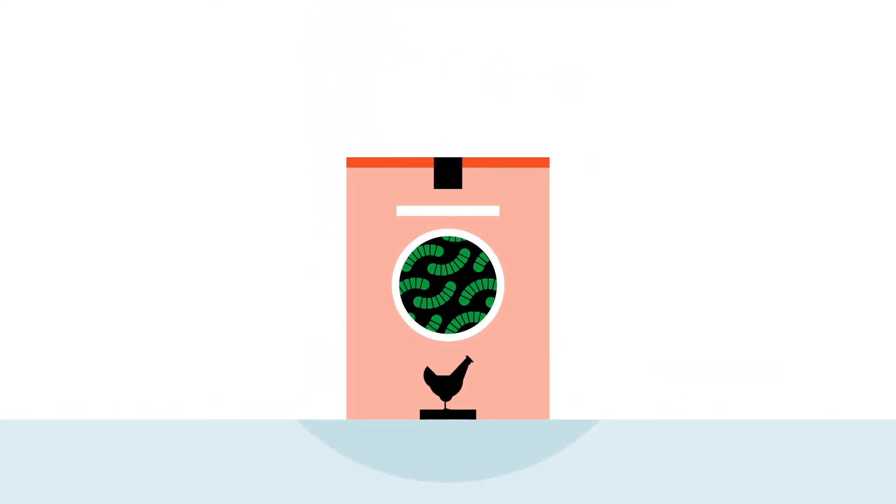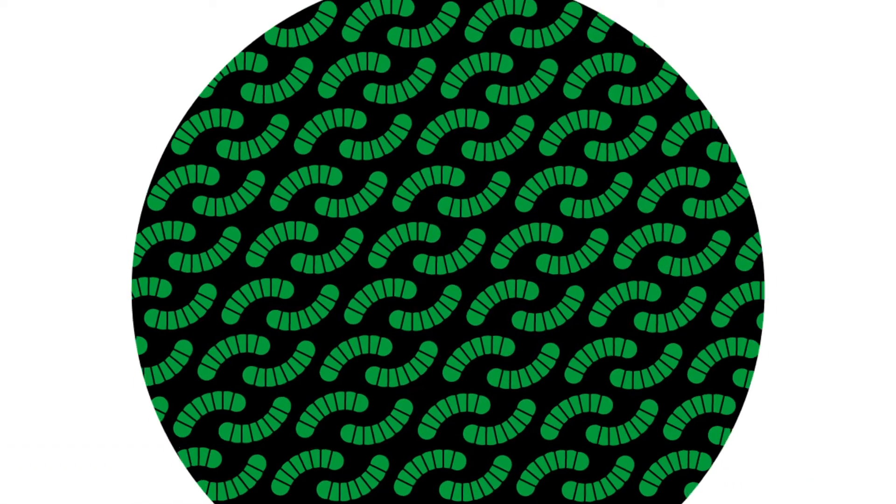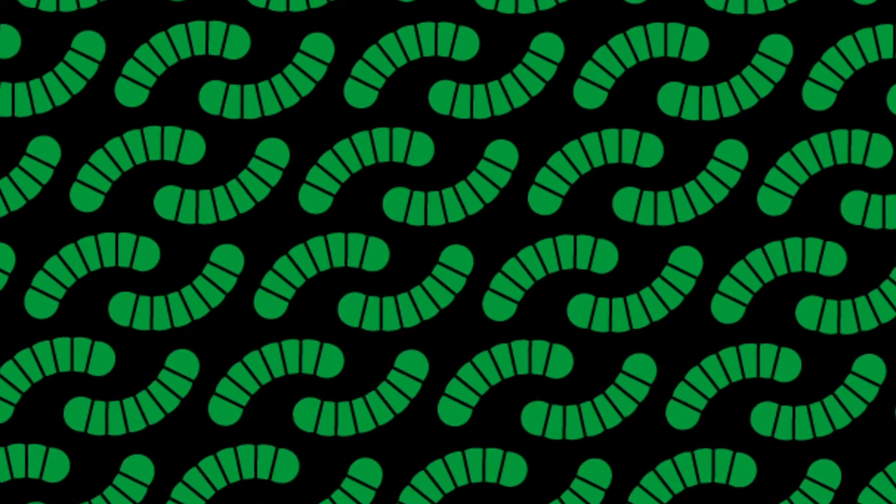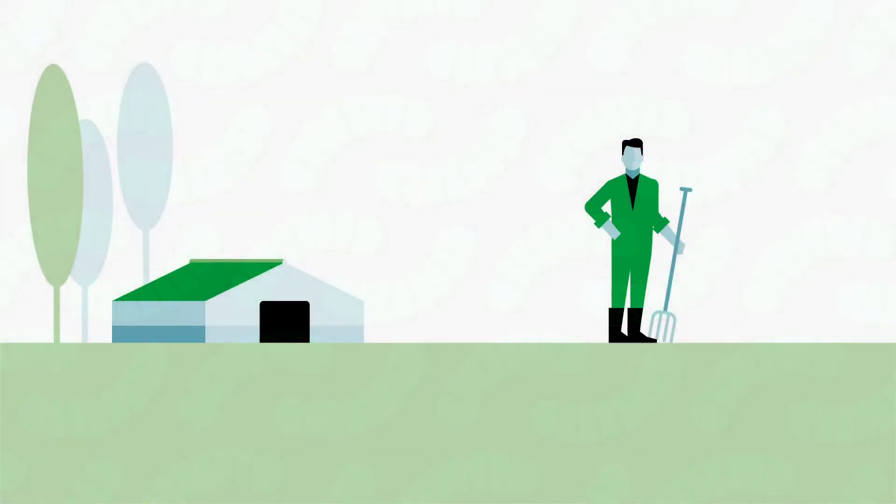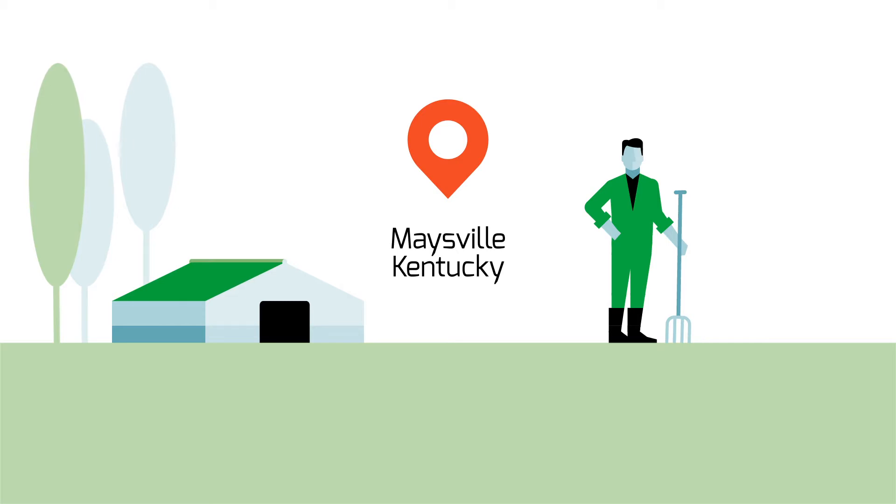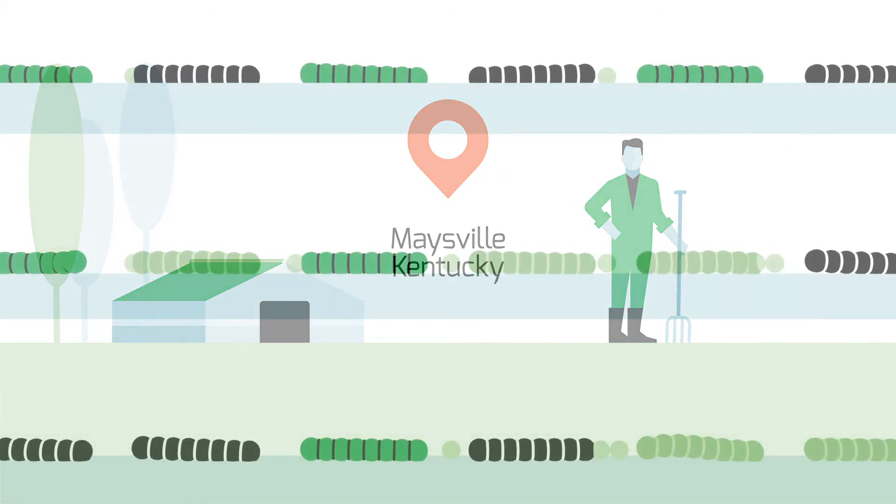Raised for consumption, the humble black soldier fly can deliver up to 2 million pounds of protein per acre. And that's exactly what we're doing in Maysville, Kentucky, where we run the first commercial insect farm in the United States.